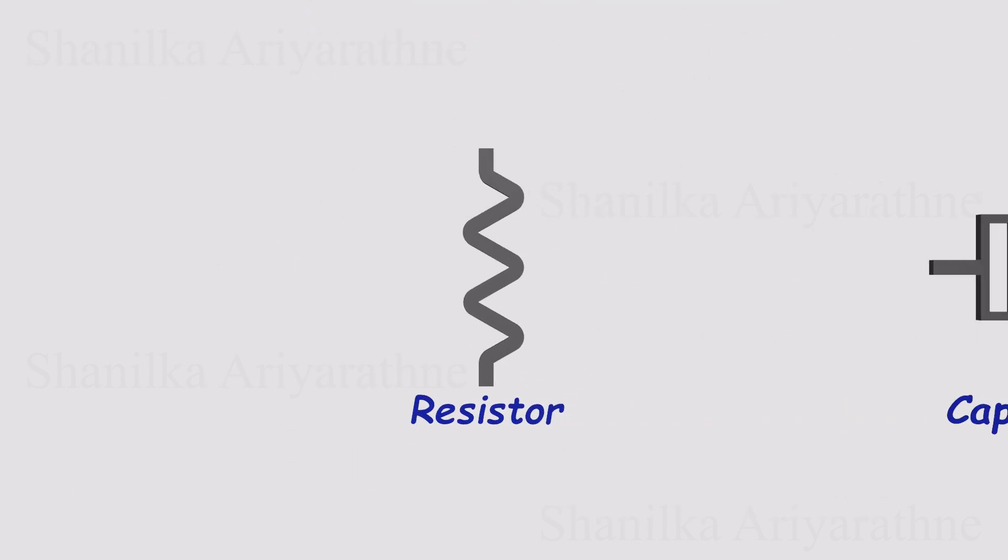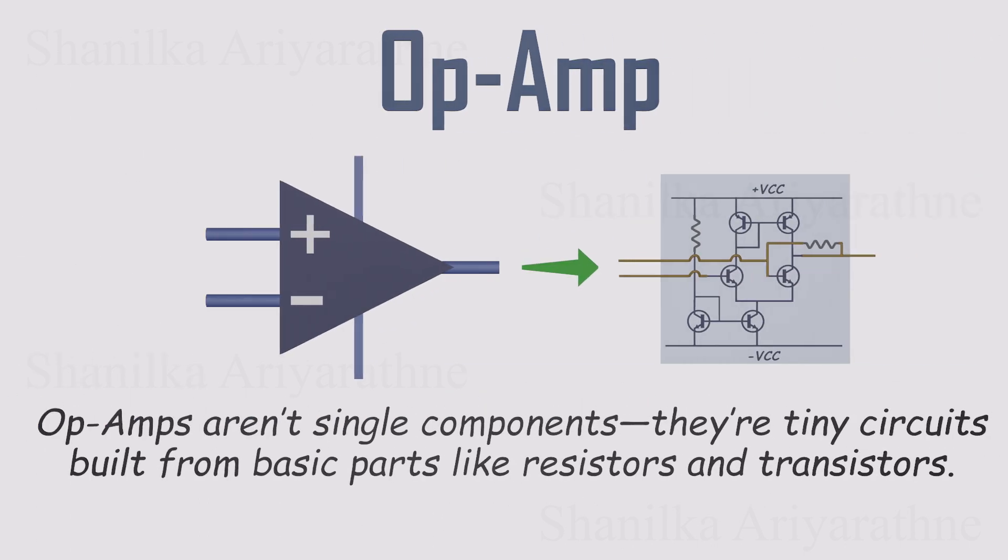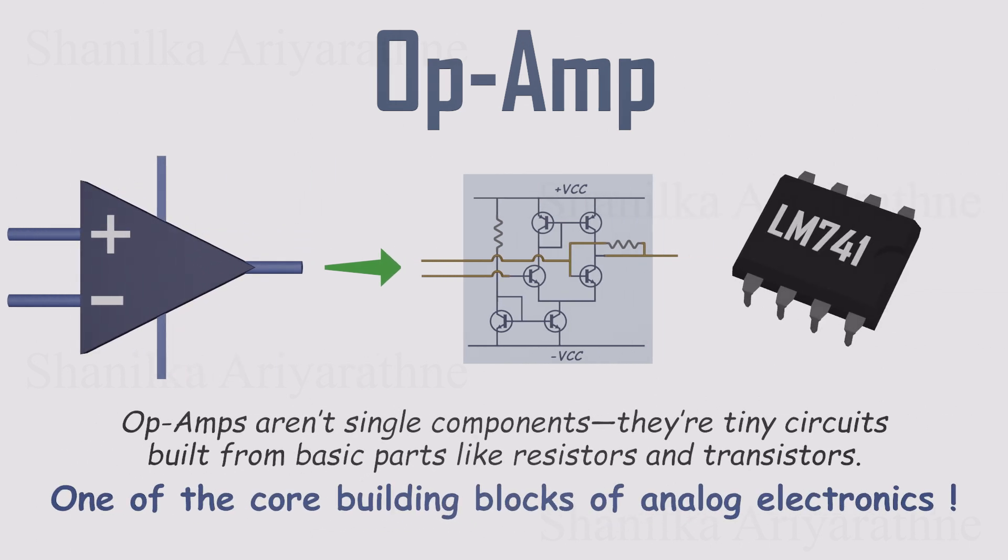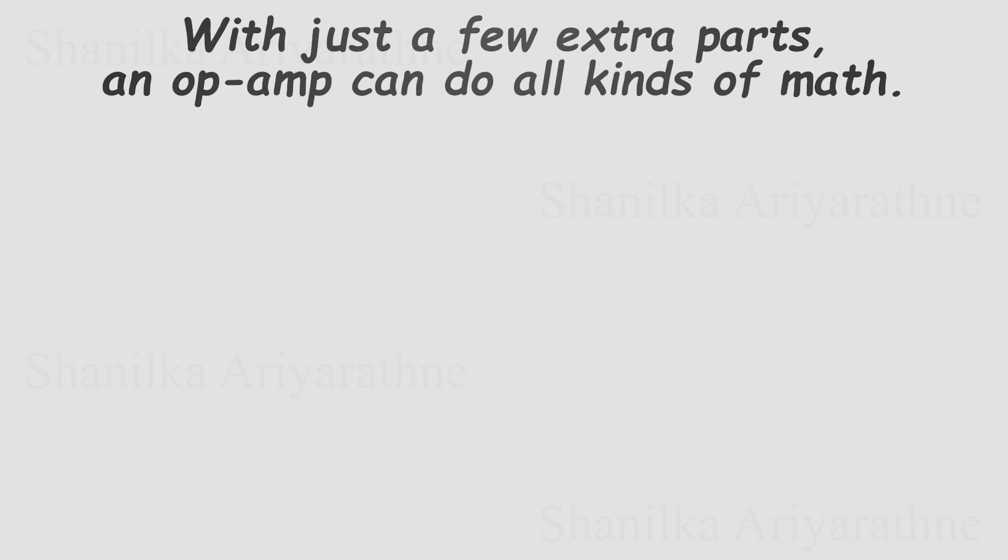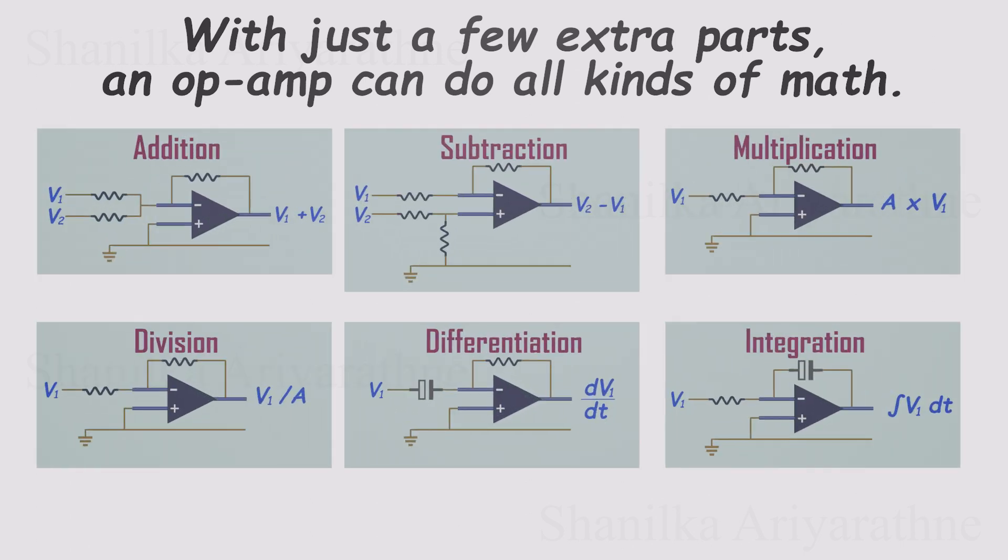Unlike a resistor, capacitor, or even a transistor, an op-amp isn't just one single part. It's actually a whole circuit built from those building blocks, all packed neatly into one tiny chip. That's why they come as ICs, integrated circuits. But the real magic of an op-amp comes from how you connect it. With just a few resistors, you can make a circuit that literally does math with voltages. You can add them, subtract them, scale them up or down, even integrate or differentiate them. And that's just the beginning.